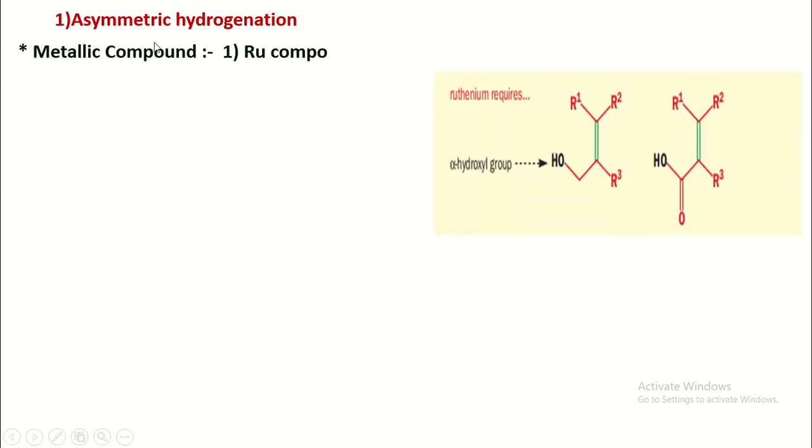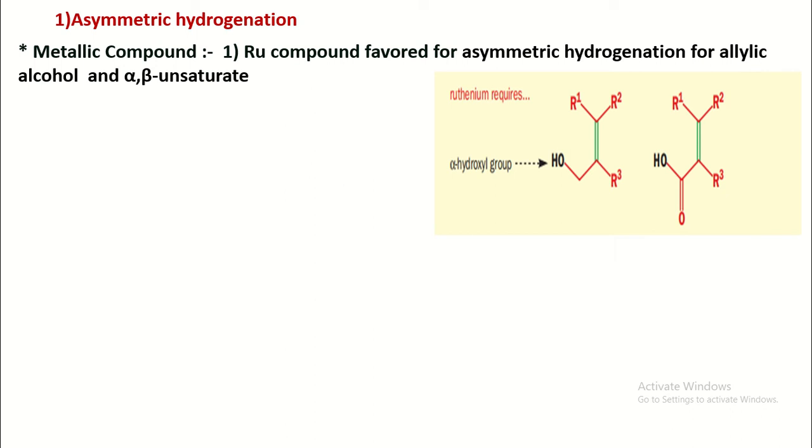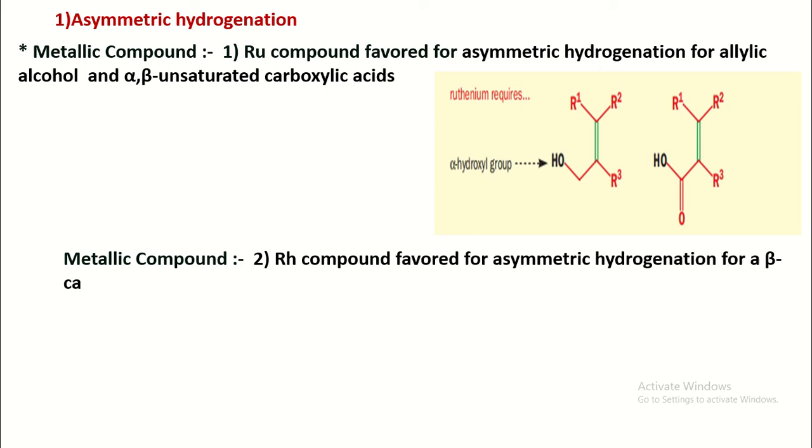Now the first reaction: asymmetric hydrogenation, means the formation of asymmetric compound by hydrogenation. But metallic compounds are required for this purpose. Generally, ruthenium compounds favor for asymmetric hydrogenation only for allylic alcohol and alpha-beta unsaturated carboxylic acid. The other metallic compound is also useful for such purpose, that is asymmetric hydrogenation, that is rhodium compound.